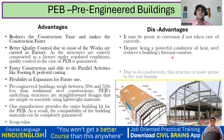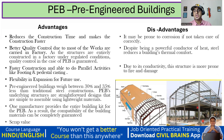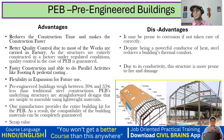The next disadvantage is that due to conductivity, the structure is more prone to fire and damage. Steel is a good conductor, so if it catches fire, the entire building is prone to damage. The durability of the structure comes down — columns and the entire building can get damaged because of fire. This is another disadvantage of PEB buildings.